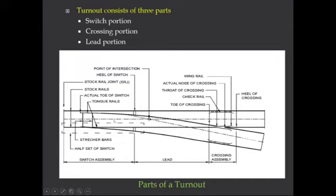Similarly for loop line movement, the wheel coming on one rail is fine, but the other wheel has to safely cross the main track rail. The check rail is provided to check the wheels and ensure the correct path movement.